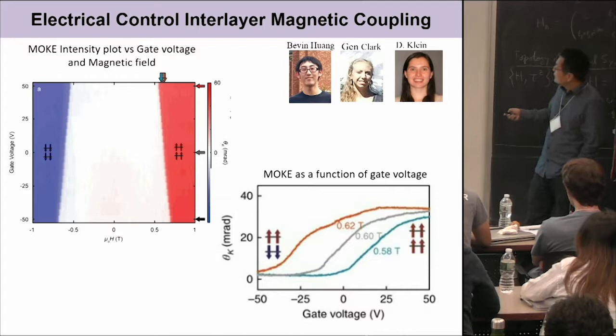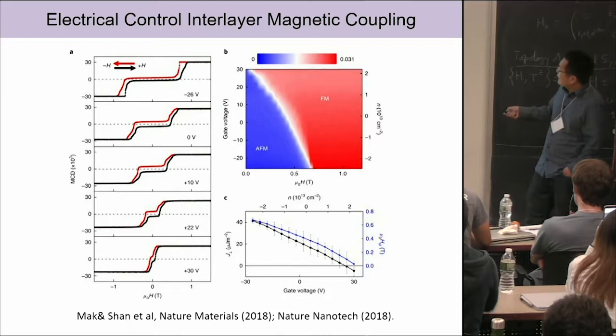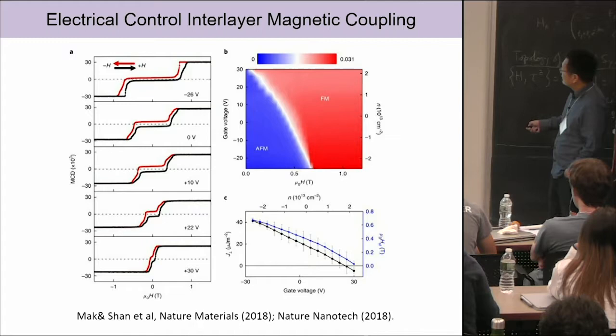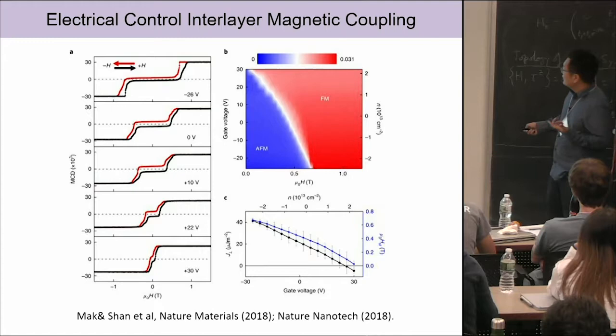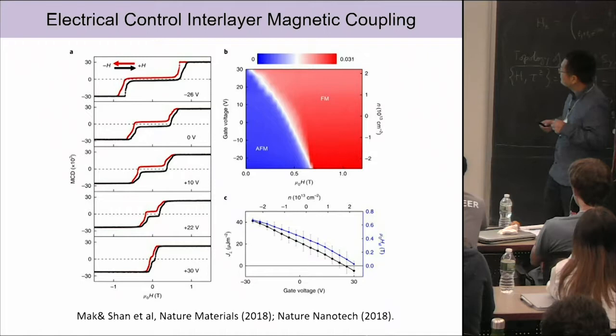For these measurements we still need magnetic field to help the process. Another group — Jiang and others — did similar measurements with even larger gate voltages applied. From that data you can extract the interlayer coupling J. The positive J represents antiferromagnetic coupling, and at very large gate voltage the J seems to become negative — indicating the antiferromagnetic interlayer coupling becomes ferromagnetic. This switching should happen if the device can apply even larger fields.